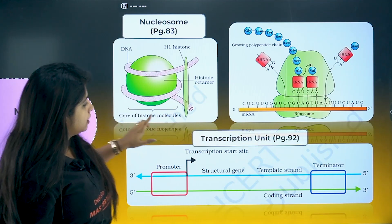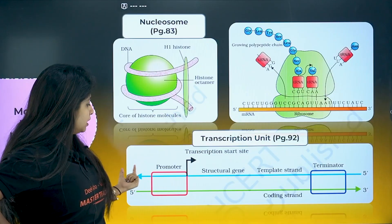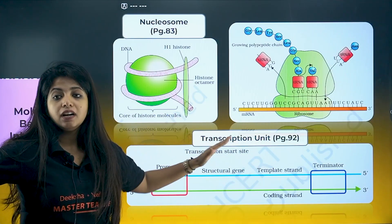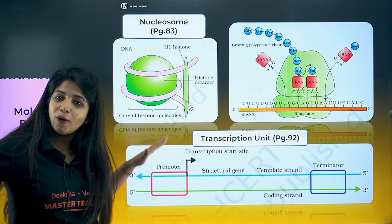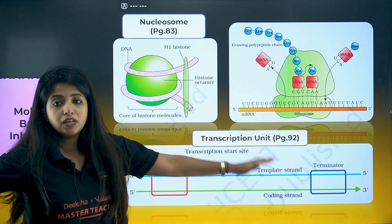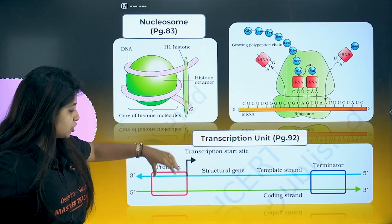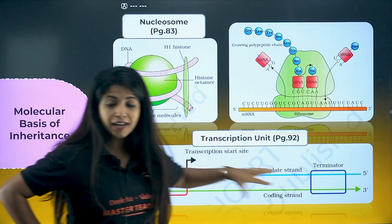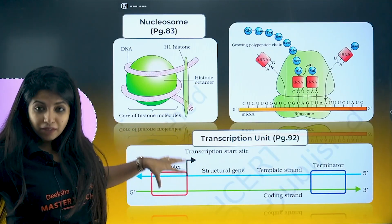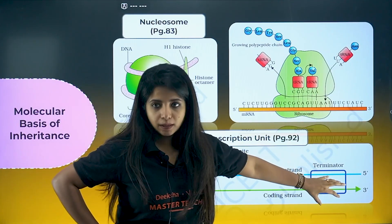The transcription unit diagram is a question repeated so many times. Mention the numbers properly: the template strand is always 3' to 5' because transcription happens in the 5' to 3' direction. The coding strand, the promoter region, and the terminator region should all be labeled. The sigma factor comes in at the promoter; the rho factor comes in at the terminator.